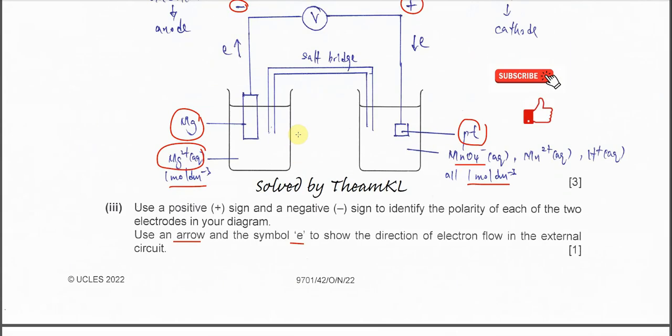Part 6: Predict how the cell reaction will change, if at all, when the solution in the magnesium half-cell is diluted by the addition of a large volume of water. First, you need to understand that the overall reaction is actually the same — there will be no change in the cell reaction. The same redox reaction will still occur: magnesium will still be oxidised and permanganate will still be reduced, even with water added. This is because the question asks about the cell reaction, not the cell potential.